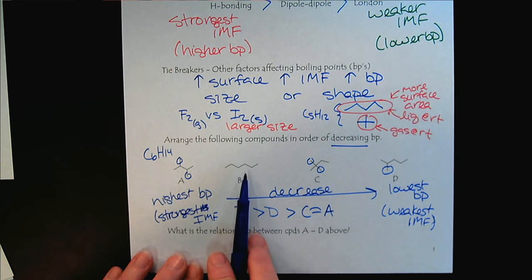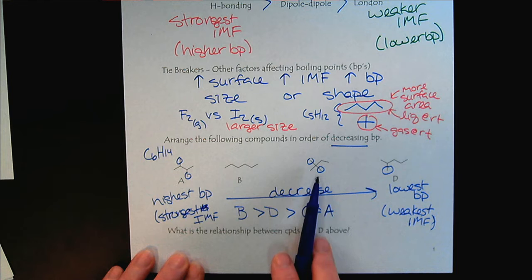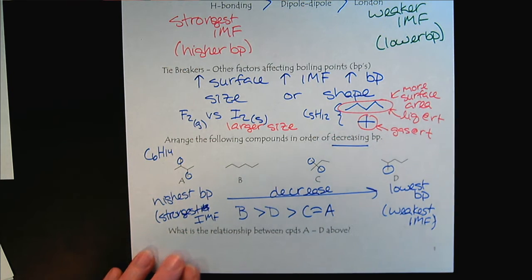But definitely, the longest chain will have the highest boiling point. And as we increase the branching, we lower the boiling point.